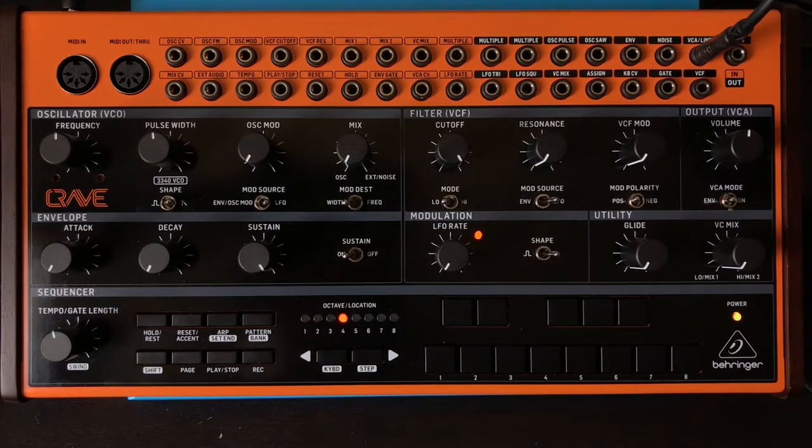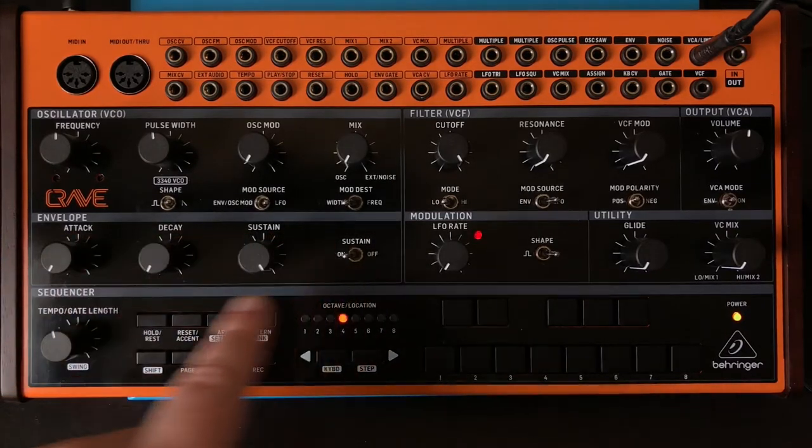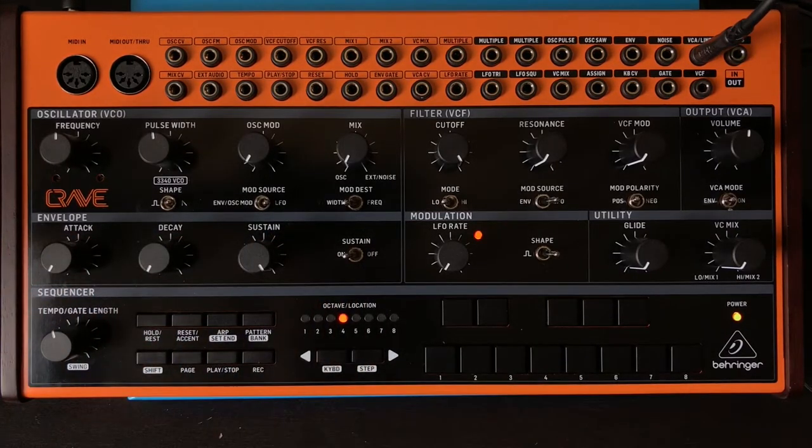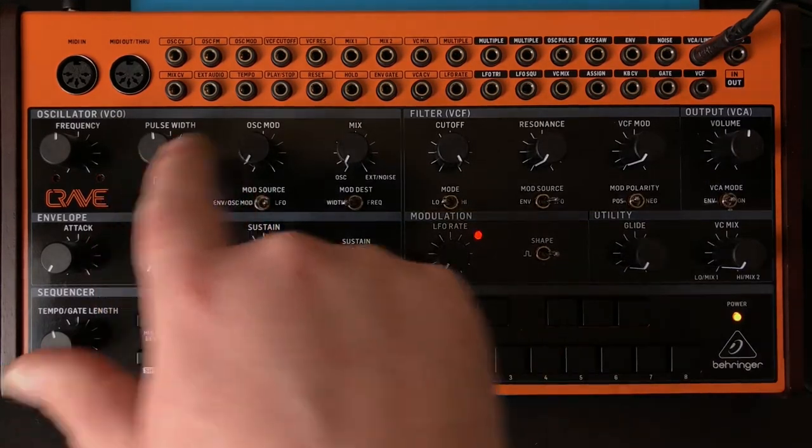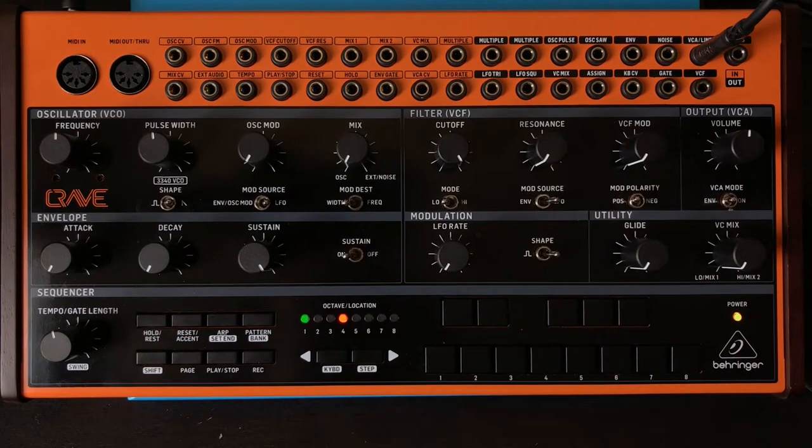Alright, welcome to the next video in our tutorial series on the Behringer Crave. Today we're going to be talking about the envelope section, which is this one right here. We're going to focus entirely on how it affects volume when you play a note. Once we understand that, then understanding how the envelope works as a modulation source for other things will make more sense.